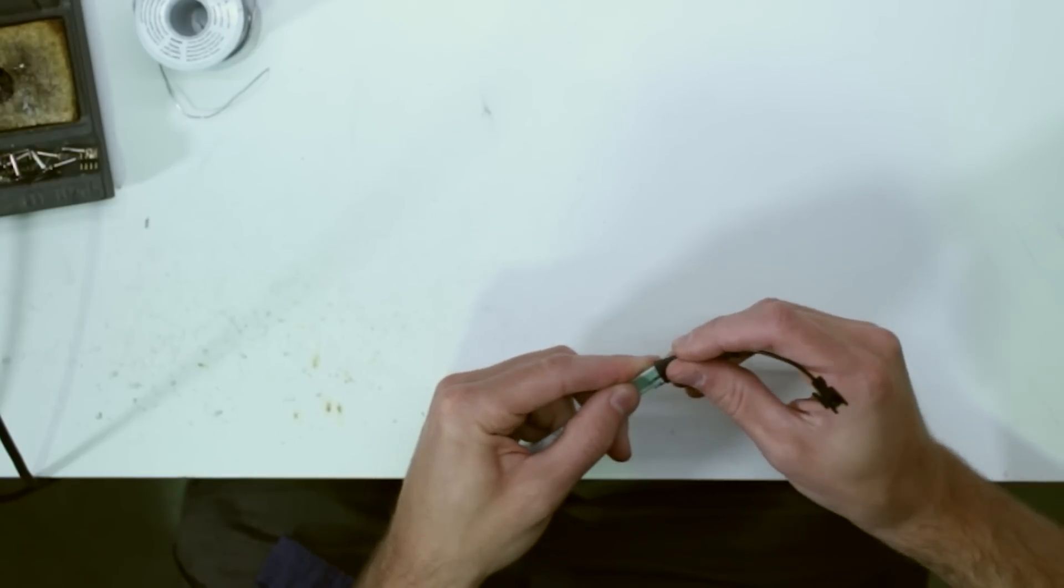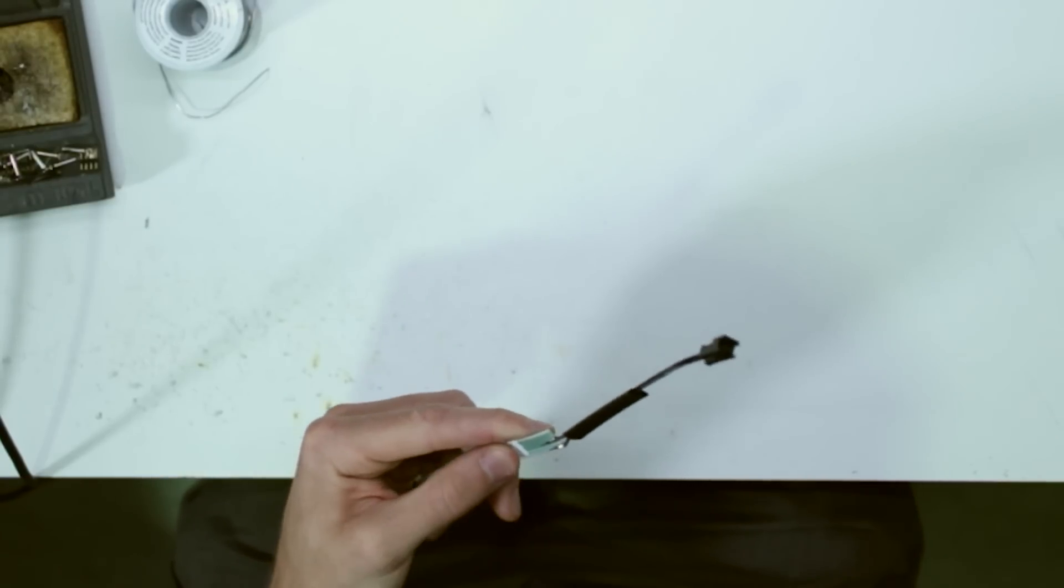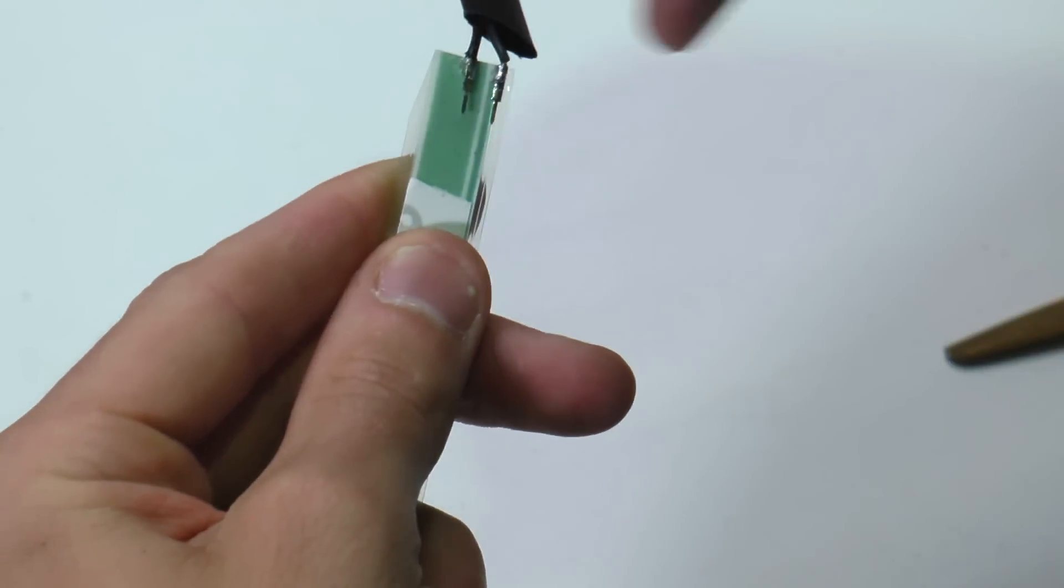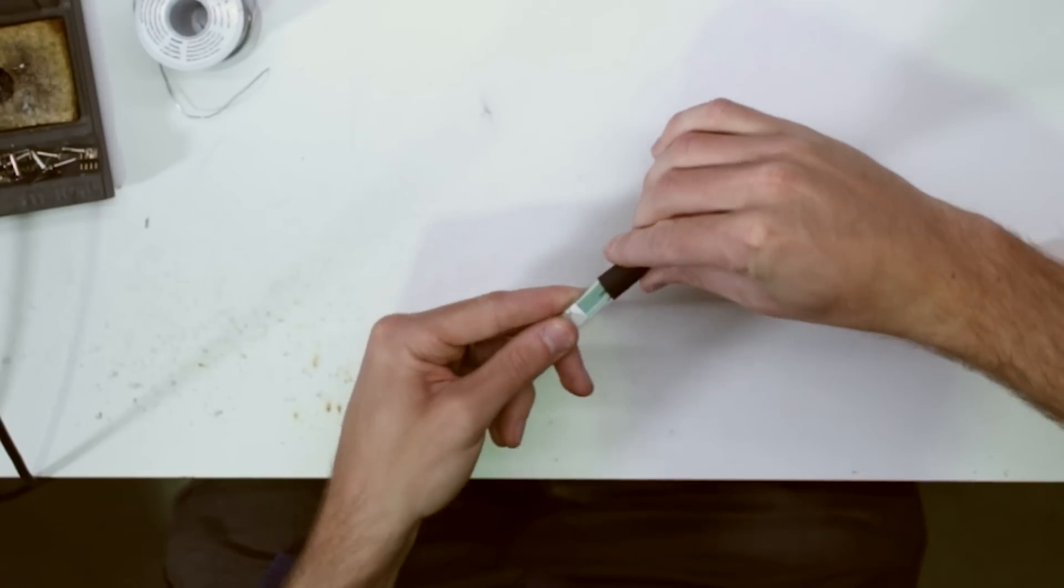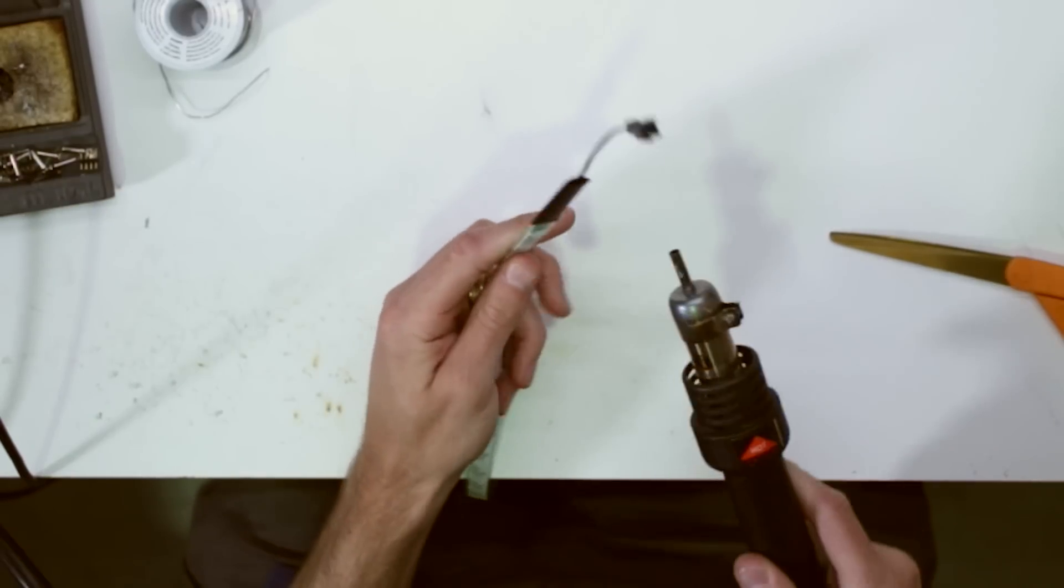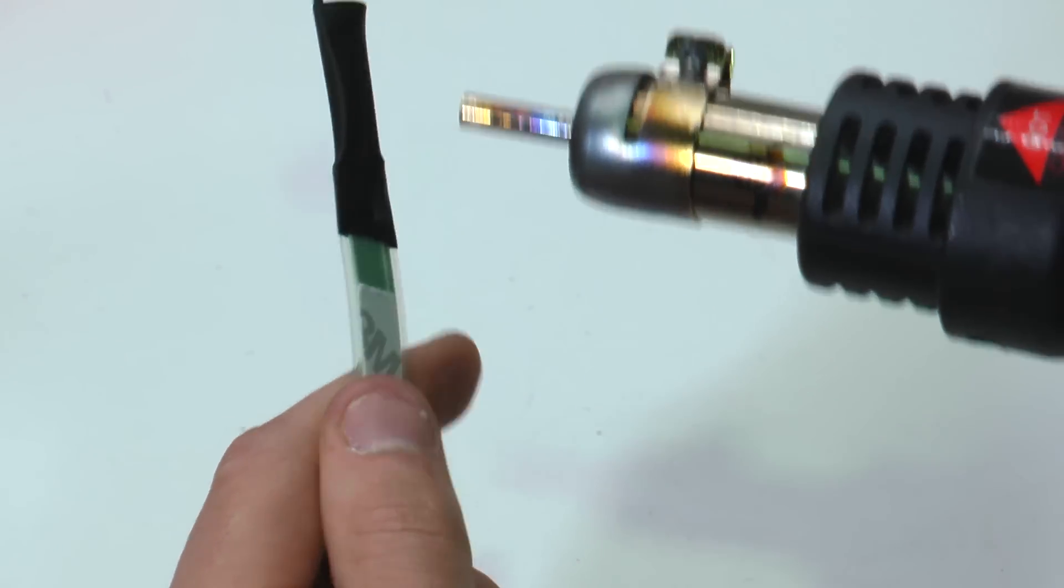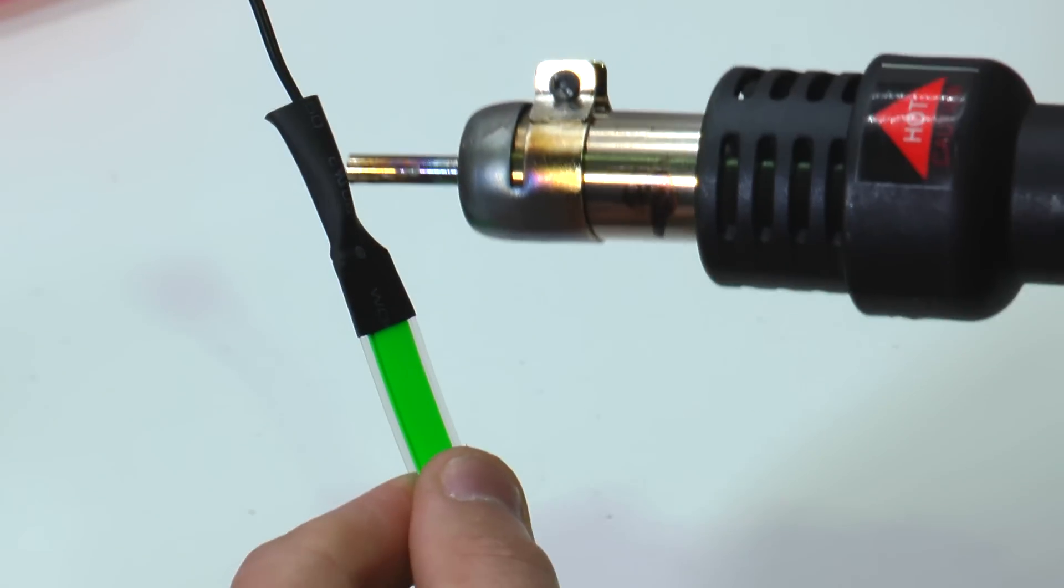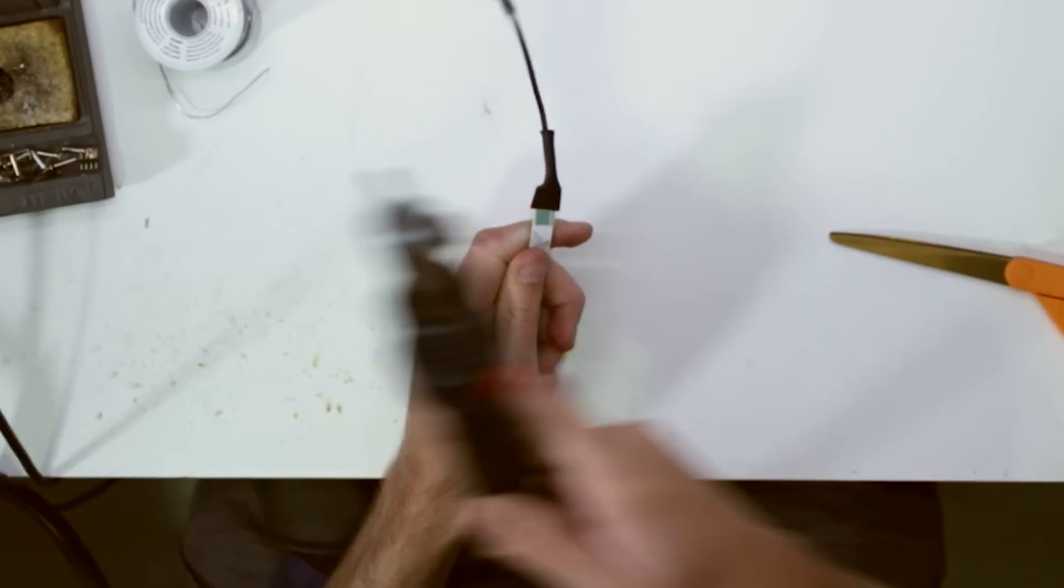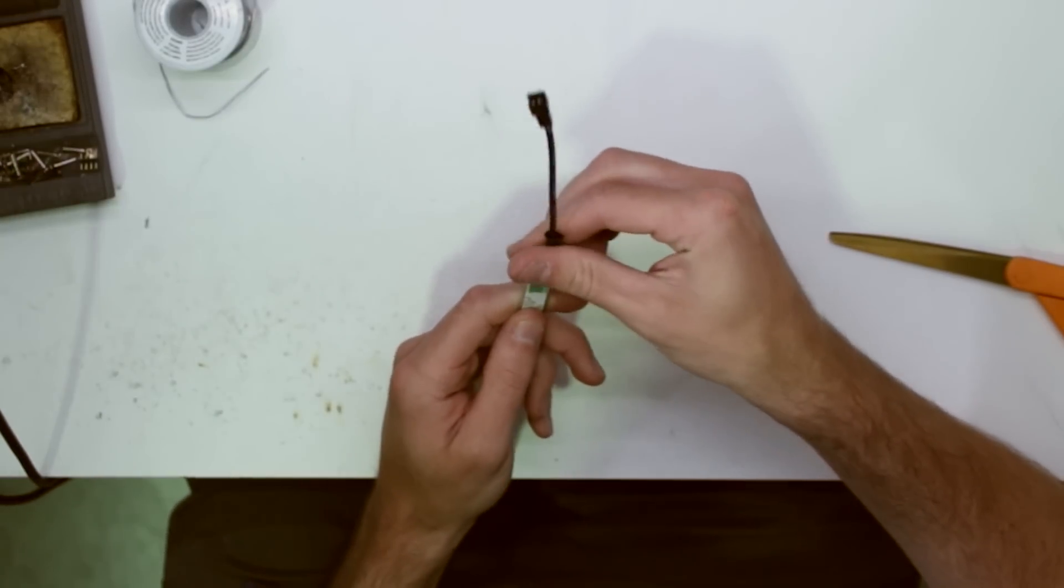Slide your heat shrink tubing over the top. If your tubing is a little bit too small, you can shave off a little bit of the outer plastic. Take your heat gun and heat the area. This will help hold everything in place and make your connection area stronger.